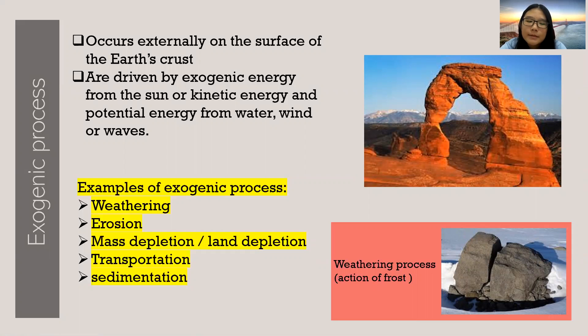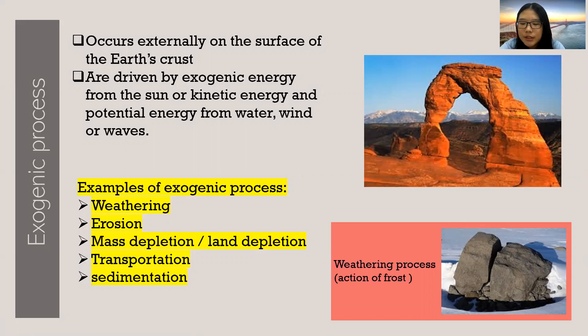Mass depletion or land depletion happens when the downslope movement of the rocks and soil due to the unstable land structure under the force of gravity. This is also known as mass wasting.